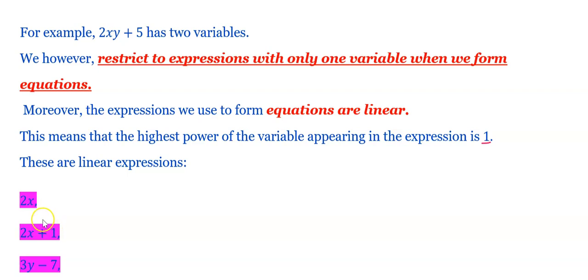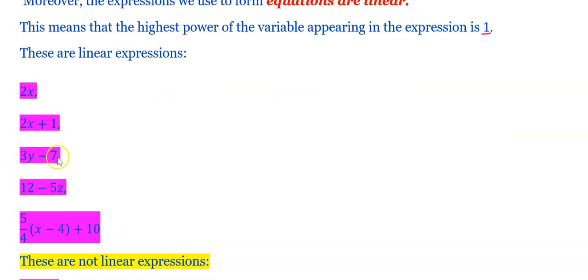These are the linear expressions — that is, they have a single variable. In the expression 5x, we have single variable x and its highest power is 1. 2x plus 1 is a linear expression — highest power of x is 1 and it has a single variable. 3y minus 7 is also a linear expression — highest power of y is 1. And 5y minus 4(x minus 4) plus 10 is also a linear expression — highest power of x is 1 and it has a single variable.